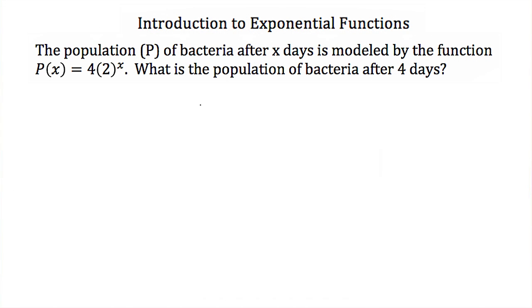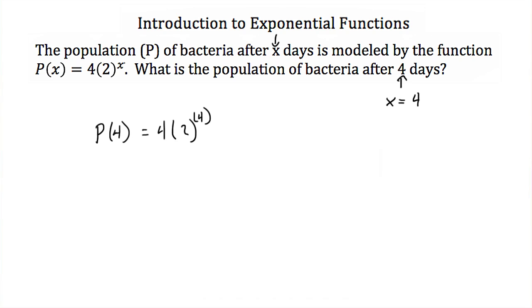Now let's see how we can use exponential functions. If the population p of a bacteria after x days is modeled by p of x equal to four times two to the x, what is the population after four days? Since we want four days, x equals four. Plugging in, p of four equals four times two to the fourth. Two to the fourth is 16, and four times 16 is 64. So the population after four days is 64.